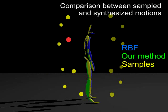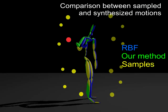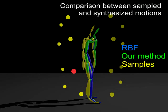The synthesized motions are verified using cross-validation, that is, by excluding the target sample from the training dataset.